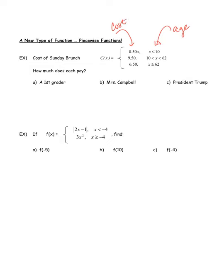This is called the cost function in terms of x, where x is the person's age. If I want the cost for a first grader — about six years old — I find which category they fit: six is less than or equal to ten, so I use category one. Their cost is 50 cents times their age: 0.50 times 6 equals three dollars. Mrs. Campbell just turned 57, which falls between 10 and 62, so the charge is a flat $9.50.